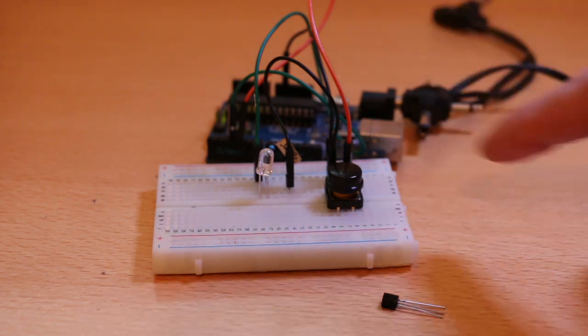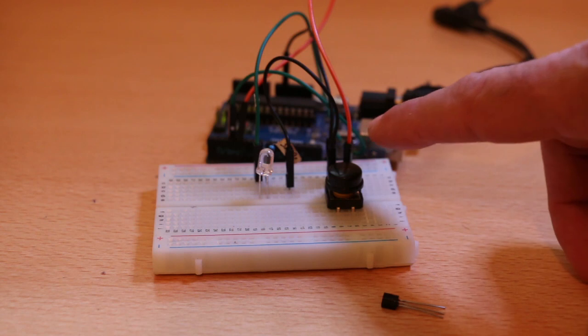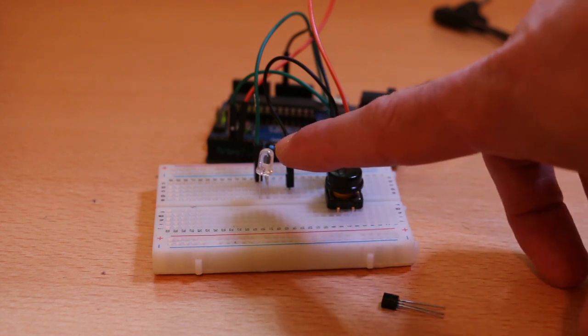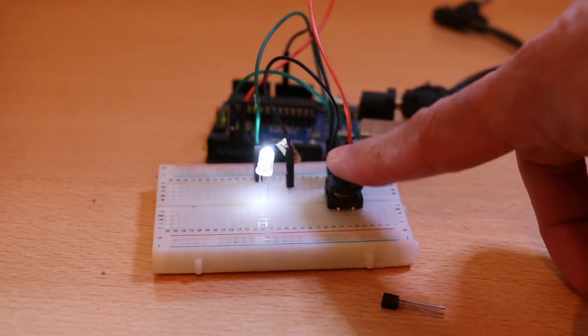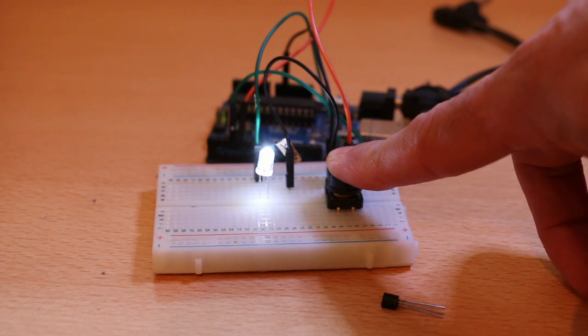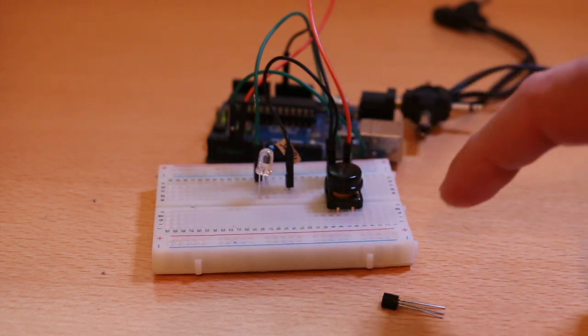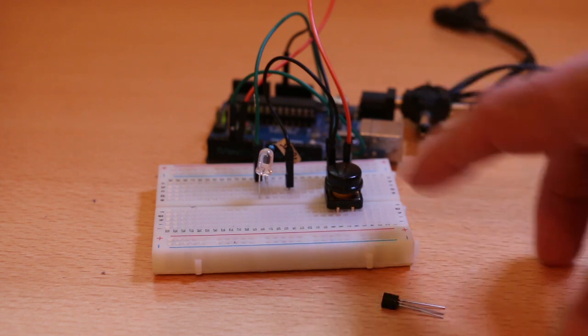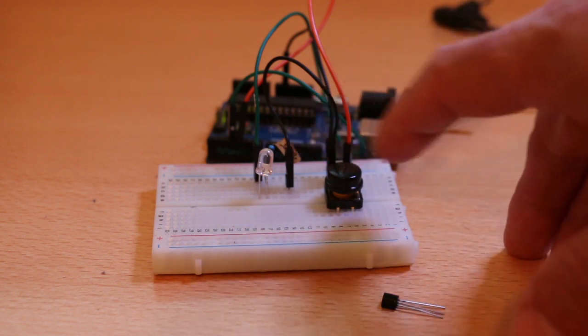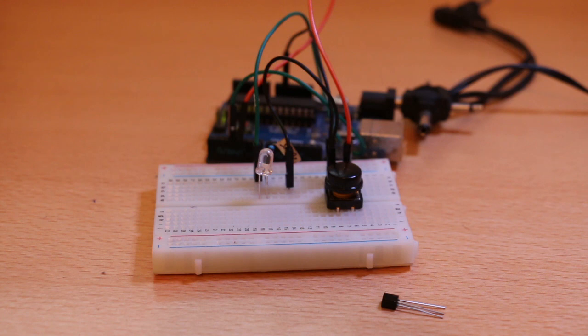Like this circuit, for example, that uses this button as an input and this LED as an output. Whenever I press the button, the LED will switch on. Leaving it will switch it off. And you can also, with a few more lines of code, have one press toggle it on and the next press toggle it off.